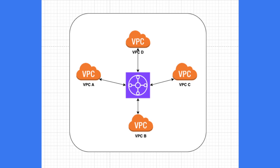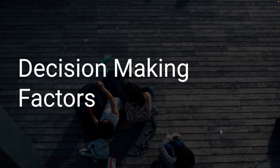With Transit Gateway, you simply connect all your VPCs to a central Transit Gateway hub. Transit Gateway works on a hub-and-spoke model — you connect your VPCs to the Transit Gateway and then from the route tables you can enable any network communication. It is also transitive in nature, so you can route traffic from VPC A to VPC C or VPC D in any direction using this hub.